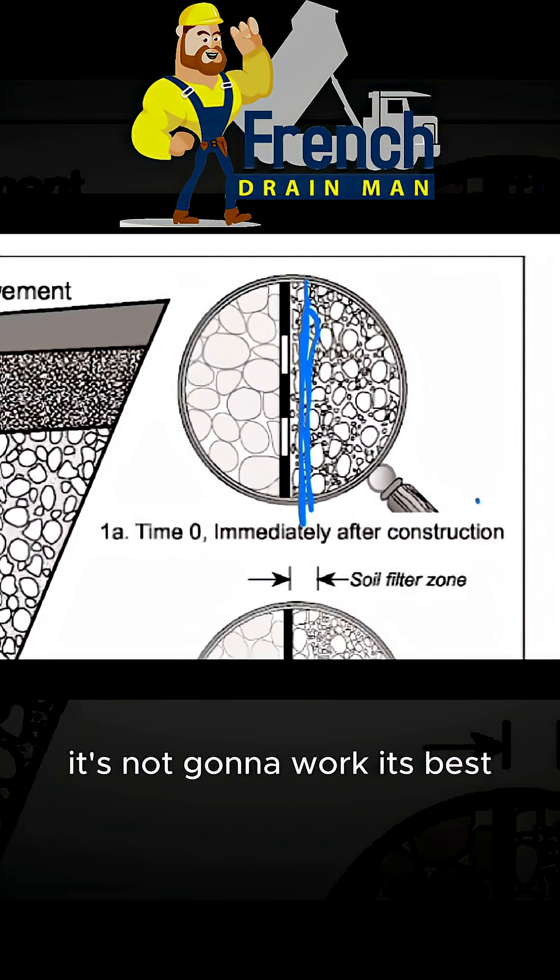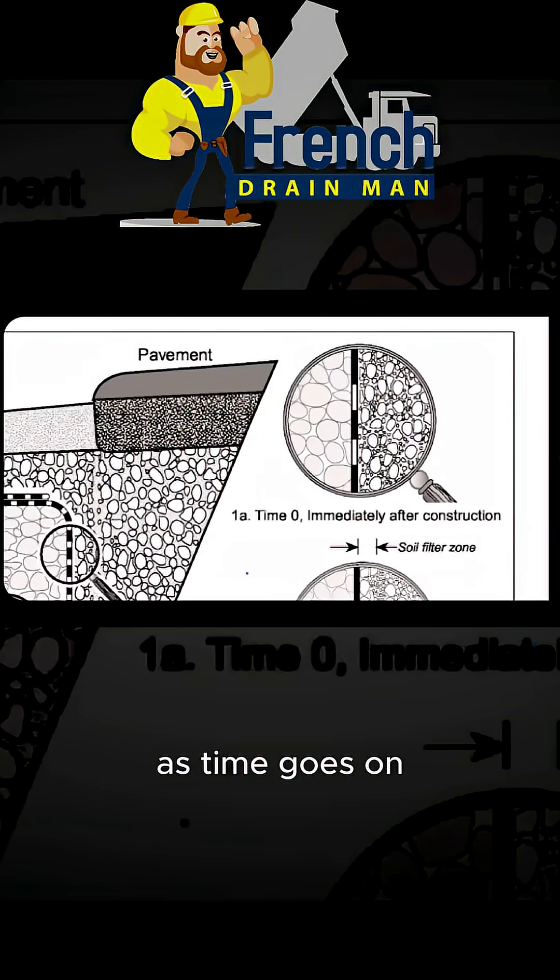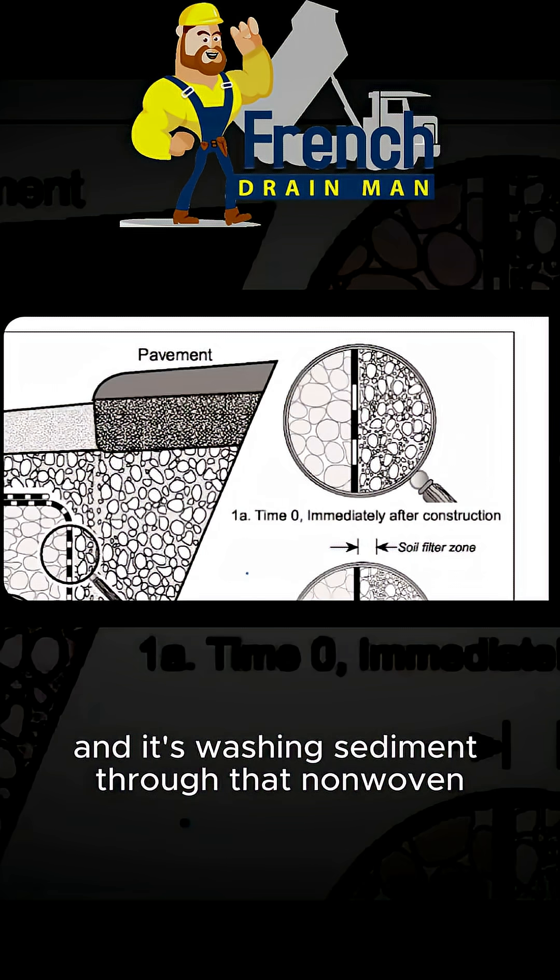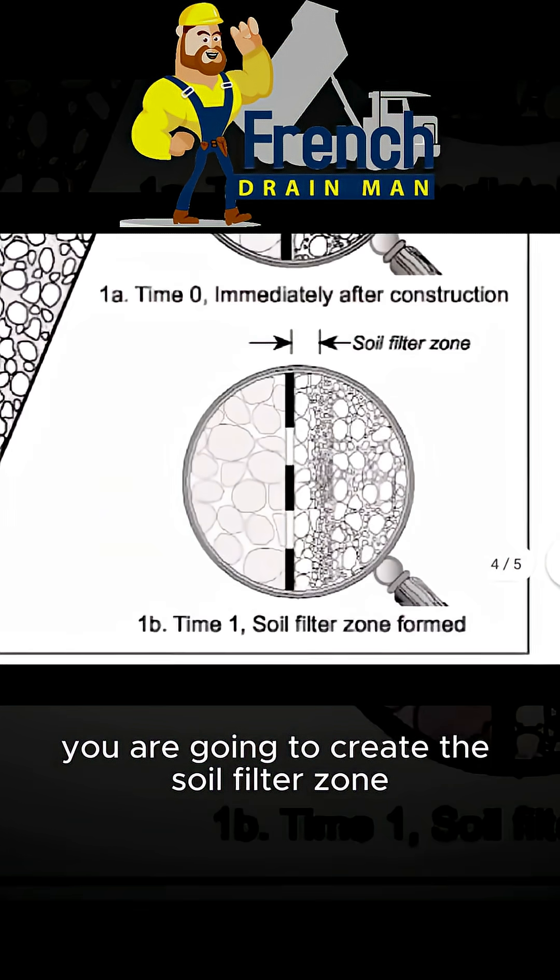Immediately after construction it's not going to work its best. You got to get all that sediment to wash through it. As time goes on and it's washing sediment through that non-woven geotextile fabric that's double punched, you are going to create the soil filter zone.